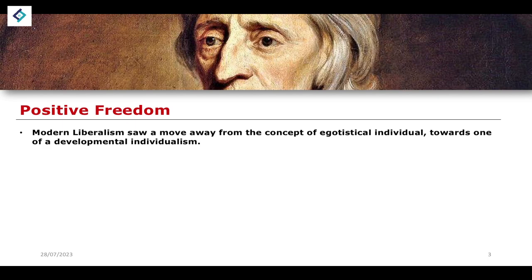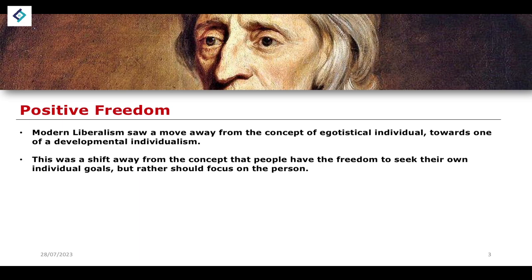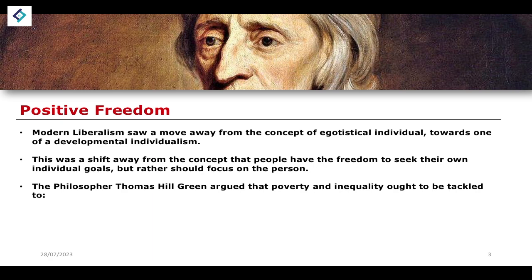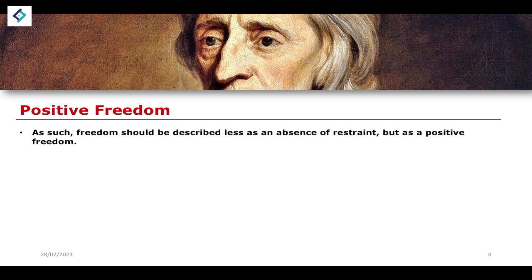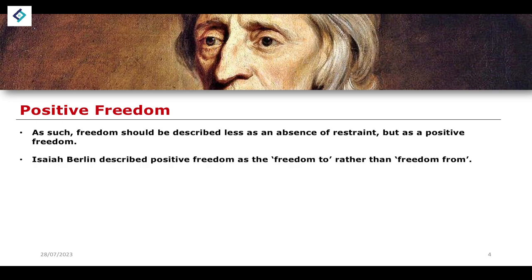Modern liberals talk about developmental individualism — a shift away from people having the freedom to seek their own individual, egotistical goals while acting in their own best interests, towards a focus on the person. The philosopher Thomas Hill Green argued that poverty and inequality ought to be tackled to maintain the conditions without which a free exercise of human faculties is impossible.